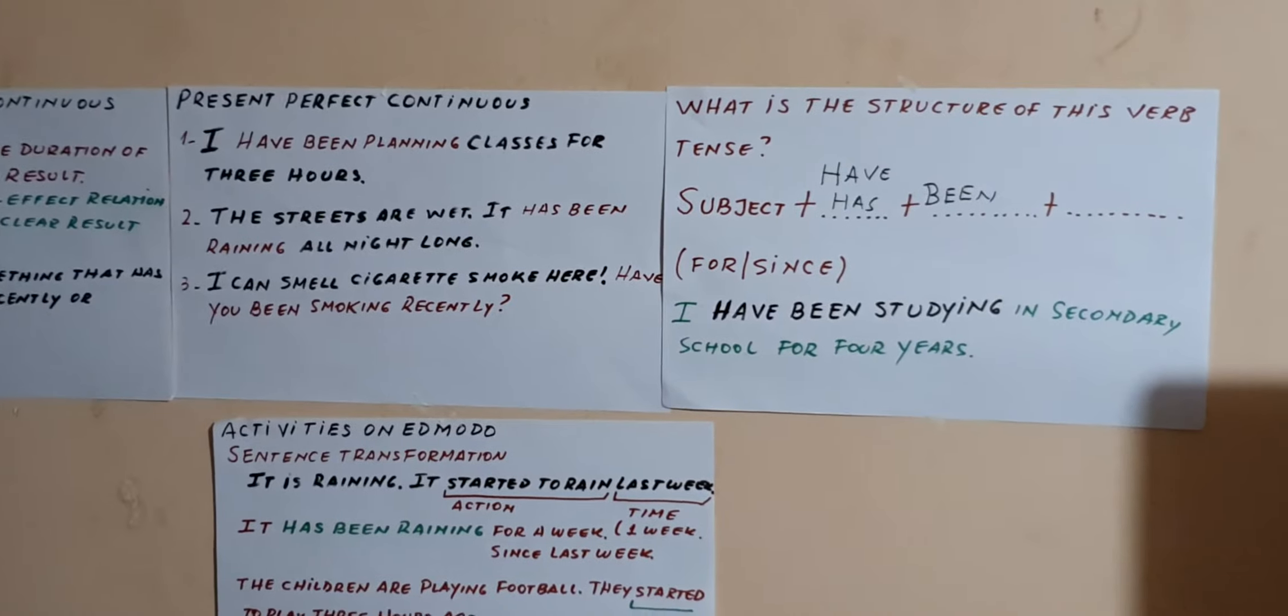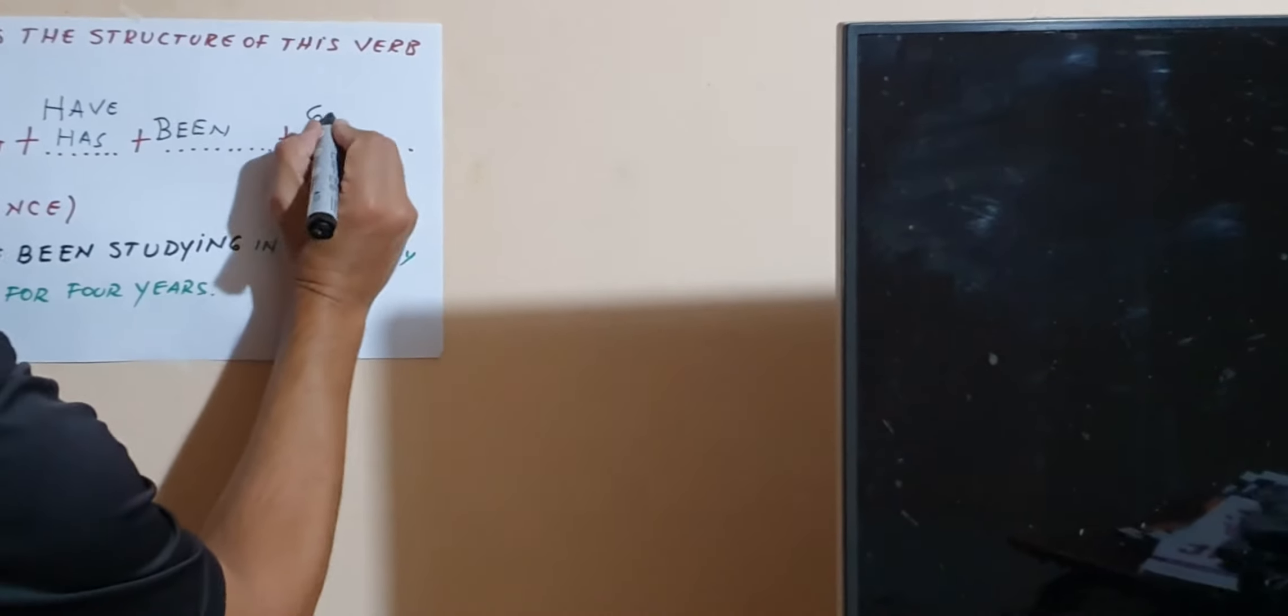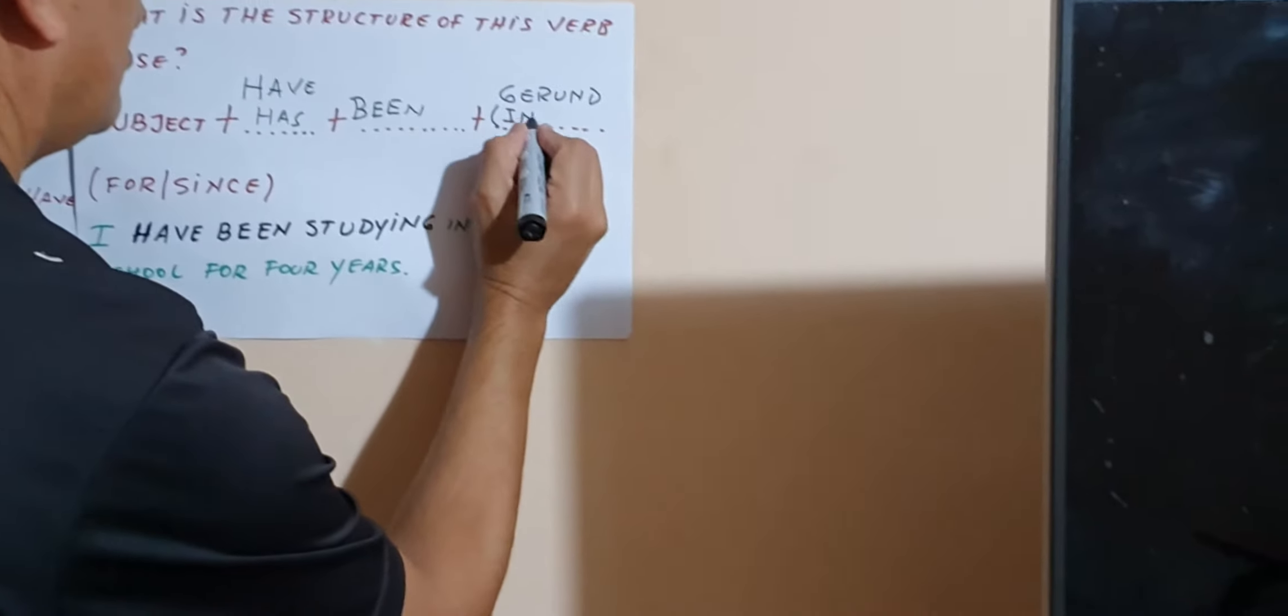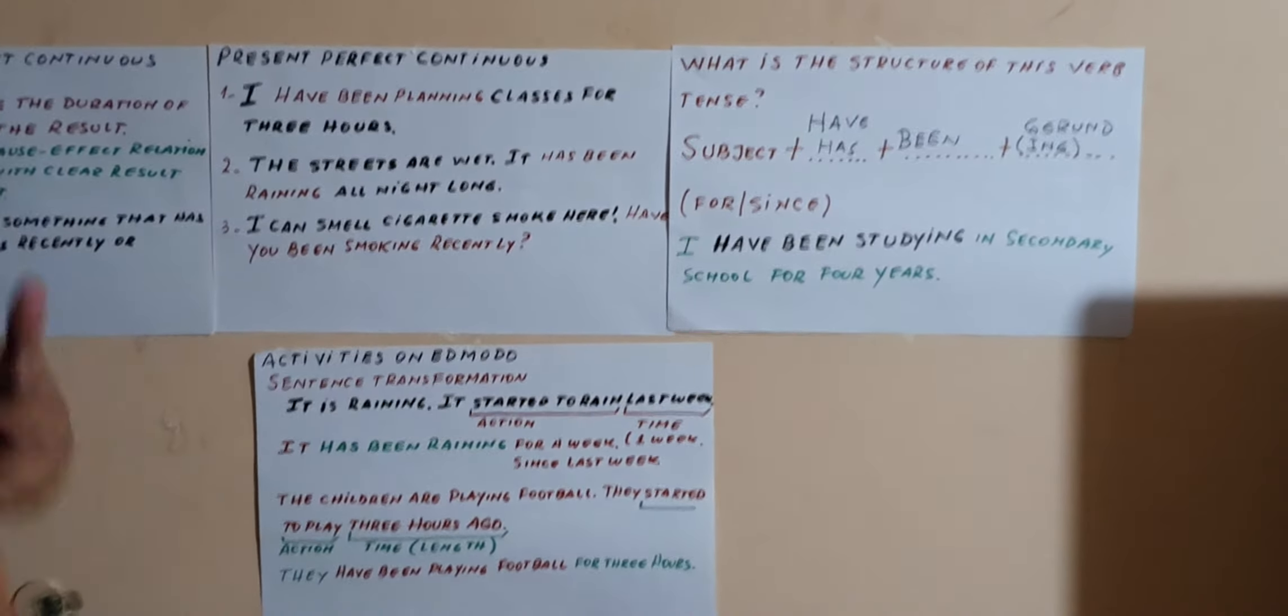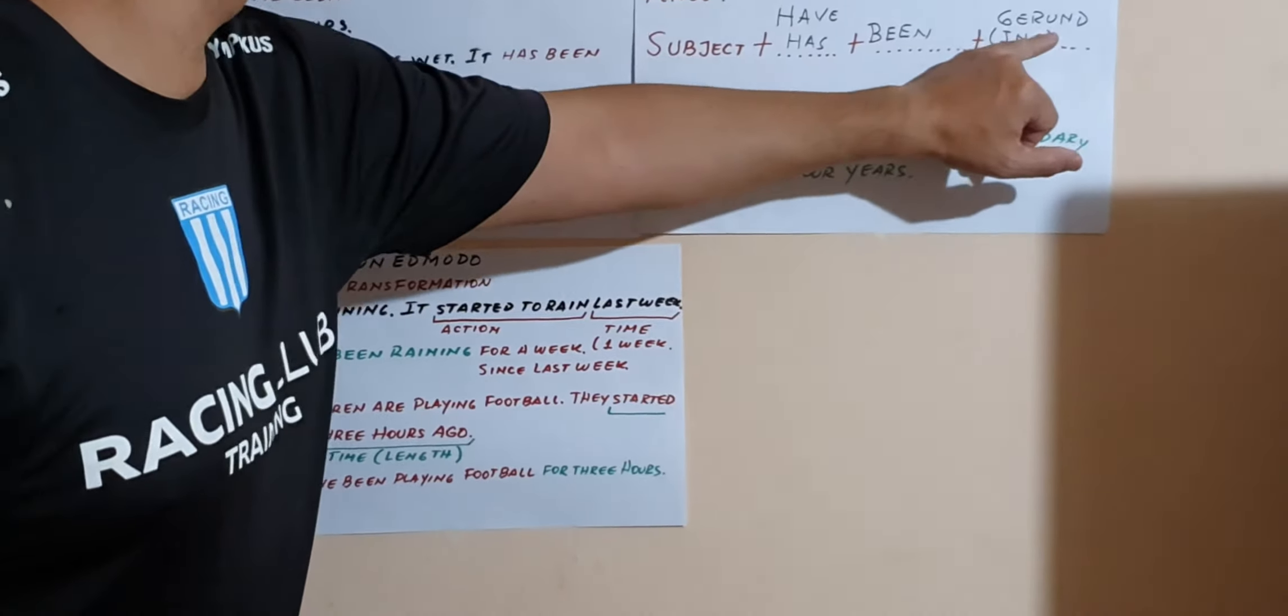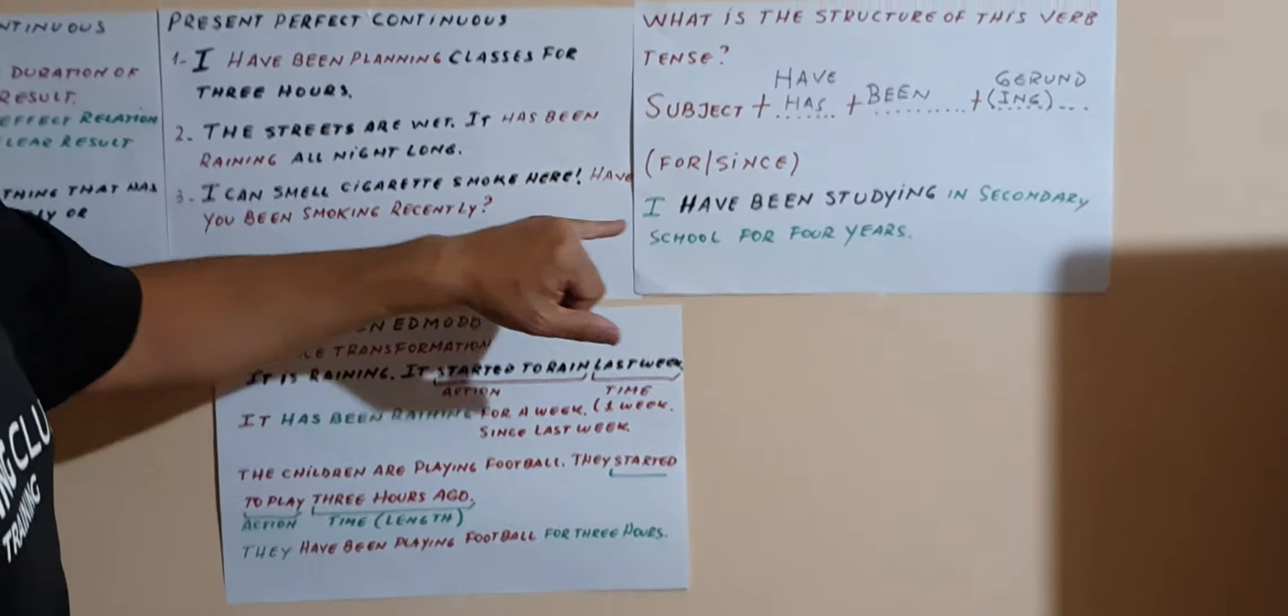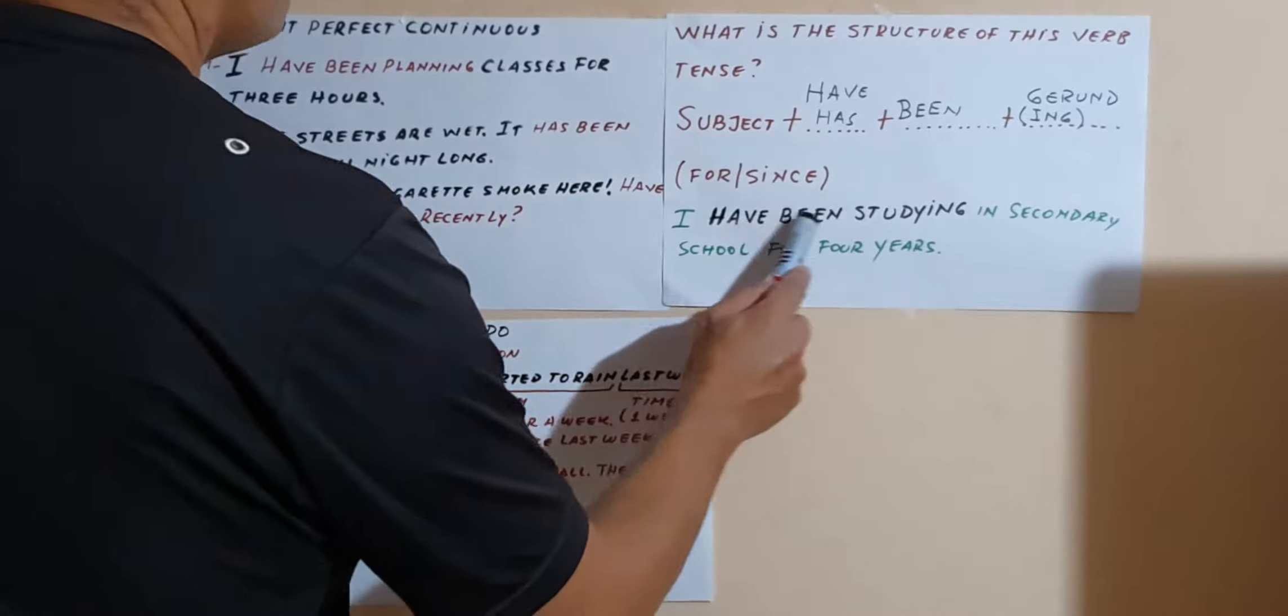And then we've got planning, raining, smoking. Cómo se llaman estas terminaciones -ing en español? Gerundio. In English, the gerund, that is to say the -ing. En forma criolla le dirán los verbos con -ing, que en realidad no es un verbo, es un verboide, pero bueno, si lo entienden así, el verbo con -ing que se llama gerundio.